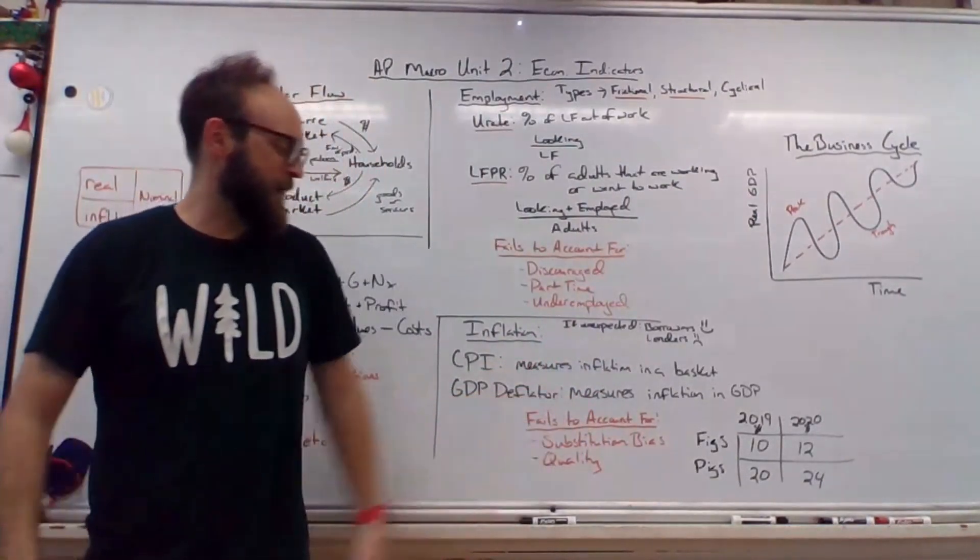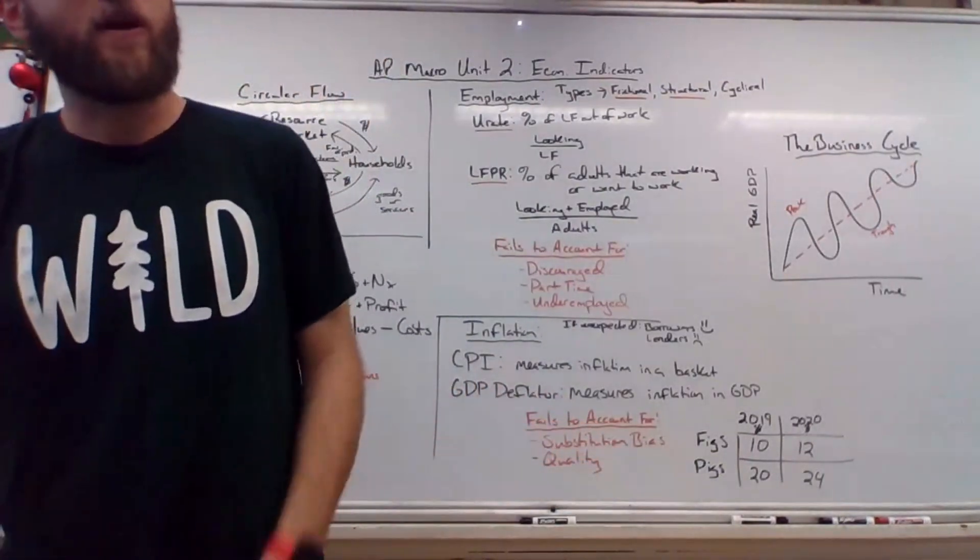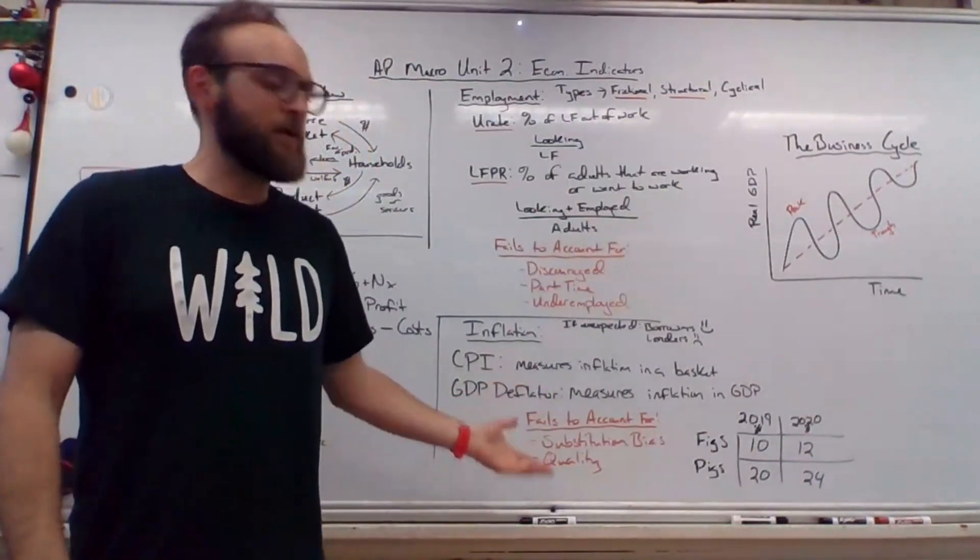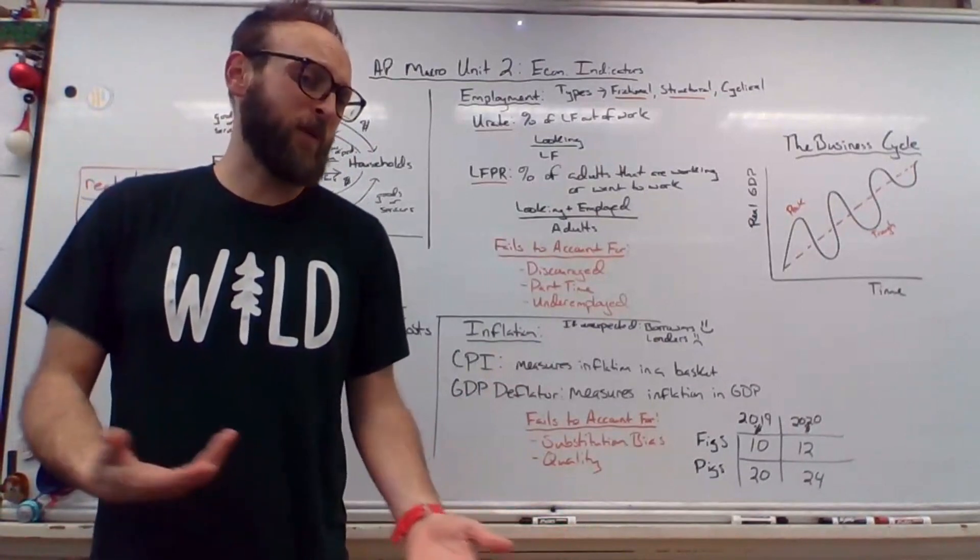It's super fun. They fail to account for the substitution bias. This idea that when prices rise, you're just going to go buy something else that's cheaper, or generic, or perhaps just gives you more joy. And also quality. We don't know that that gallon of milk is the same gallon of milk, because that would be impossible.